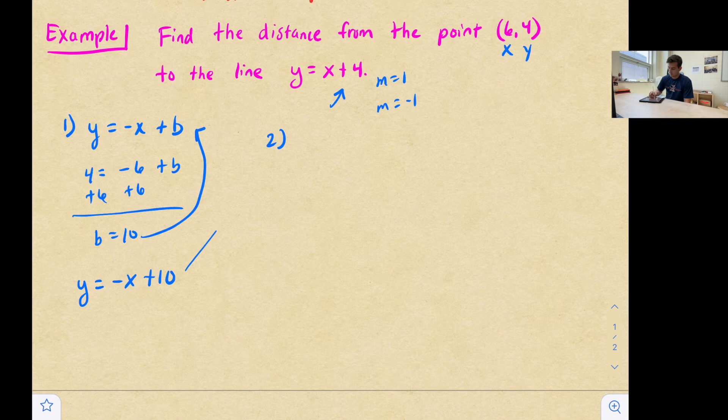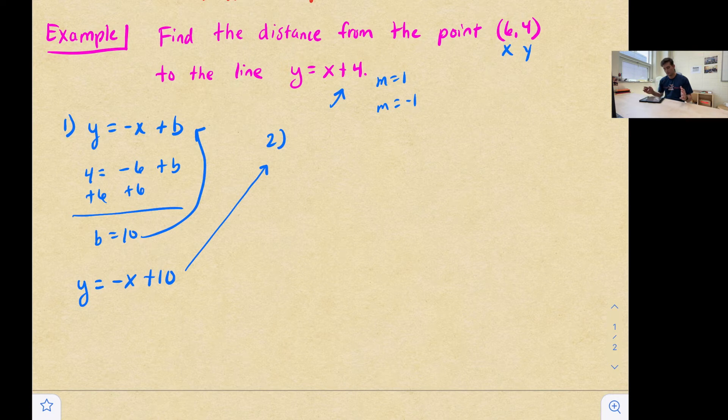Okay, so now this brings us to step two. Now we're going to take our original equation, y equals x plus four, and our perpendicular line equation, y equals negative x plus 10. And we're going to solve a system of equations, because that's going to tell us where those two lines intersect, which tells us the point that's on both lines.